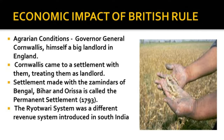Economic Impact of British Rule — Agrarian Conditions: Governor-General Cornwallis, himself a big landlord in England, wanted to create landlords in India on the English model. There were already revenue farmers under the Mughals; Cornwallis came to a settlement with them, treating them as landlords. For the first time in India, there was a class of zamindars or landlords with the right to own and inherit land. The cultivators were reduced to the position of mere tenants. The British dealt directly with the landlords and gave them total freedom over tenants. This settlement — made with the zamindars of Bengal, Bihar and Orissa — is called the Permanent Settlement of 1793. The Ryotwari system was a different revenue system introduced in South India, where the peasant was the proprietor and paid tax on the land directly to the government, remaining in possession as long as revenue was paid.